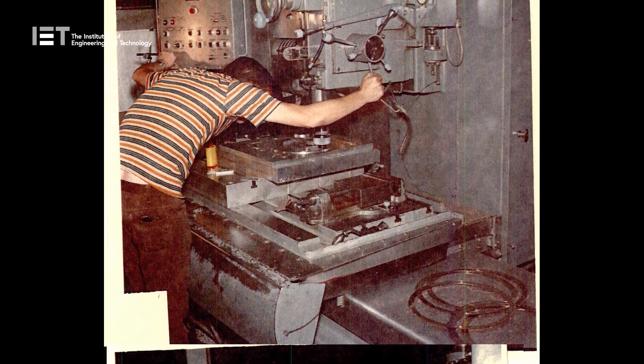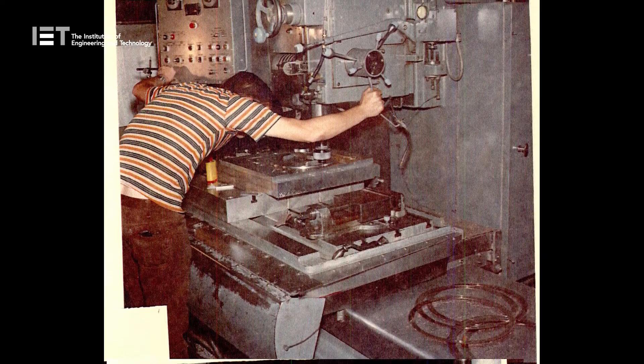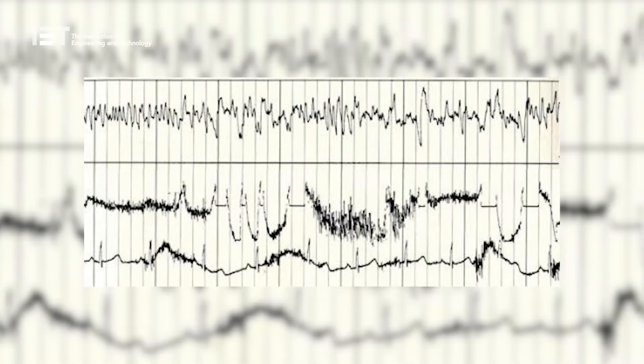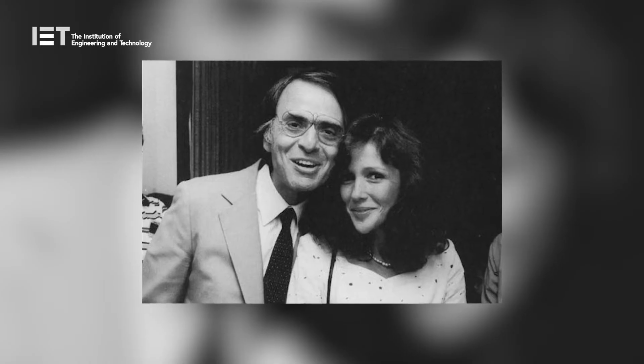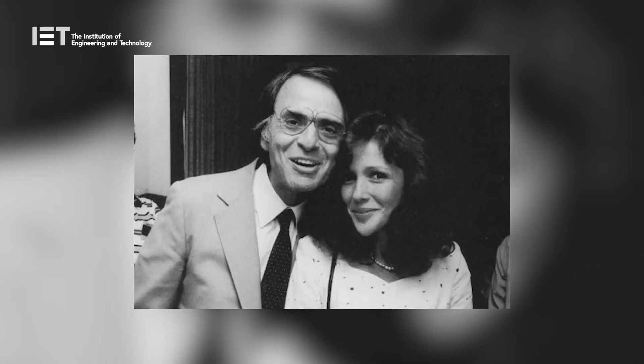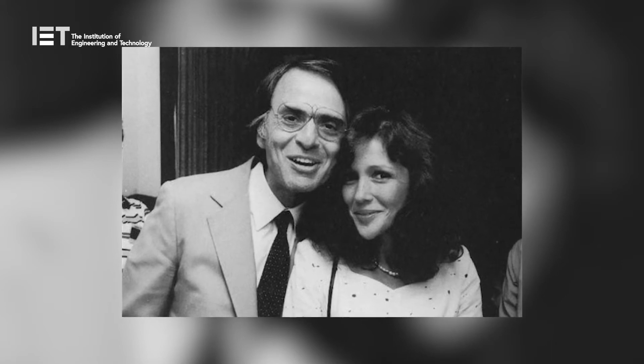One of the most interesting things included in the records are the brain waves of a woman in love. Ann Druyan, who would later become Carl Sagan's wife, recorded her brain patterns just days after her and Sagan got engaged.